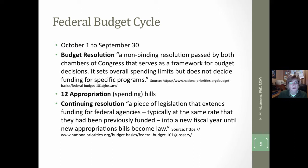The federal budget cycle is a one-year cycle starting October 1st and ending September 30th. We are currently in the fiscal year 2016-17 budget cycle. A budget resolution is a non-binding agreement between both chambers of Congress that serves as the framework for budget decisions. Congress is required to pass 12 appropriation or spending bills. When they don't do this — which seems to be more often than not — they will need to pass continuing resolution bills.